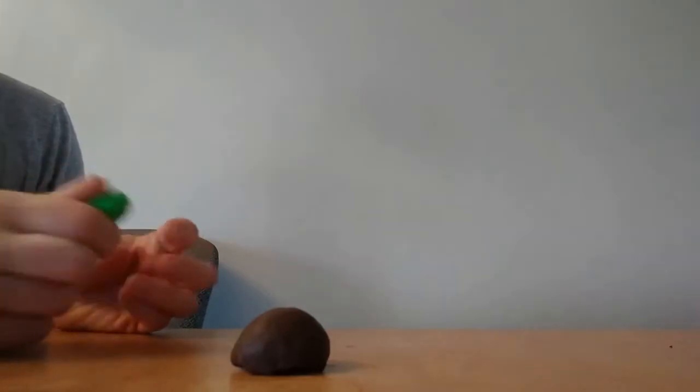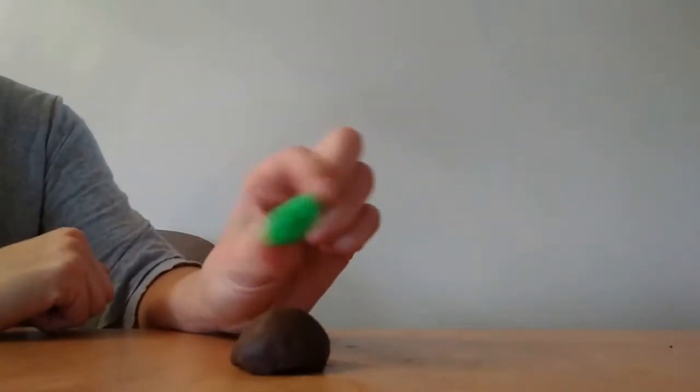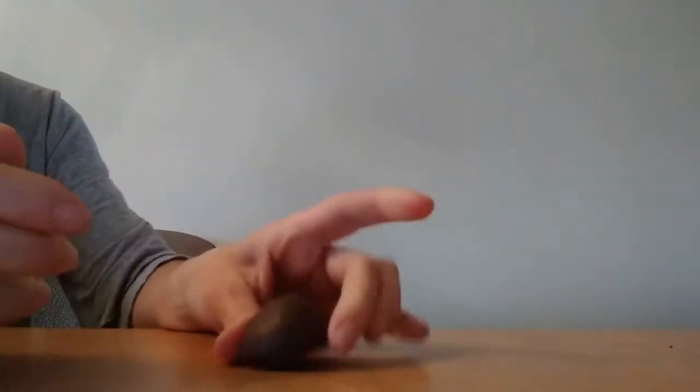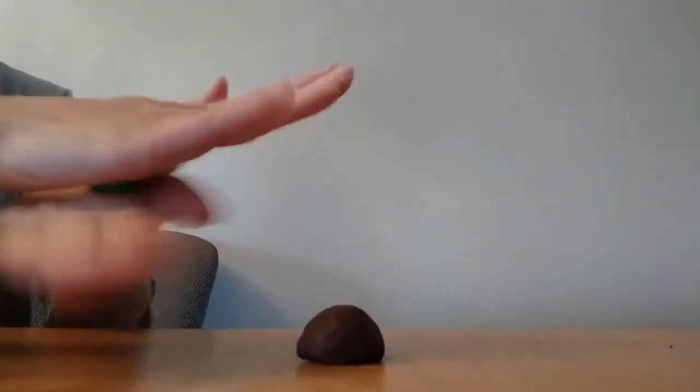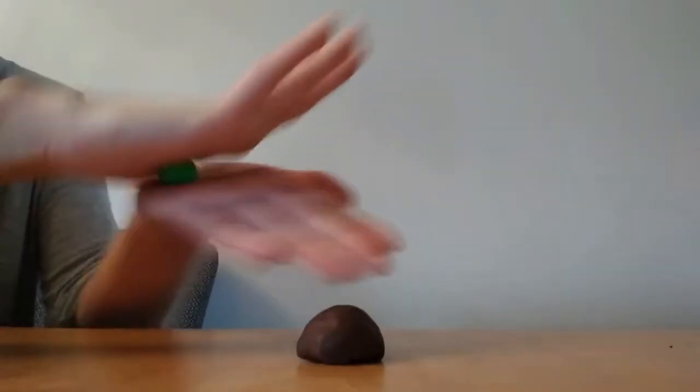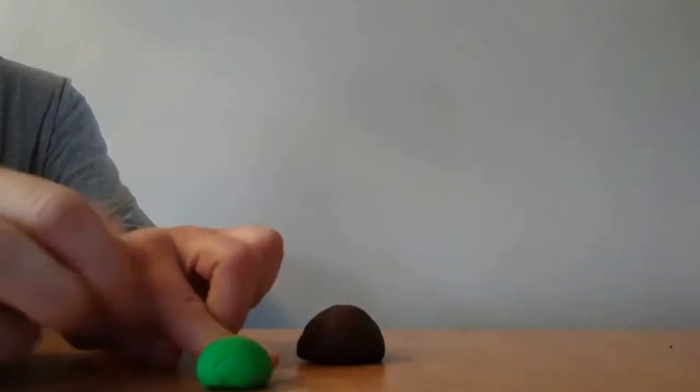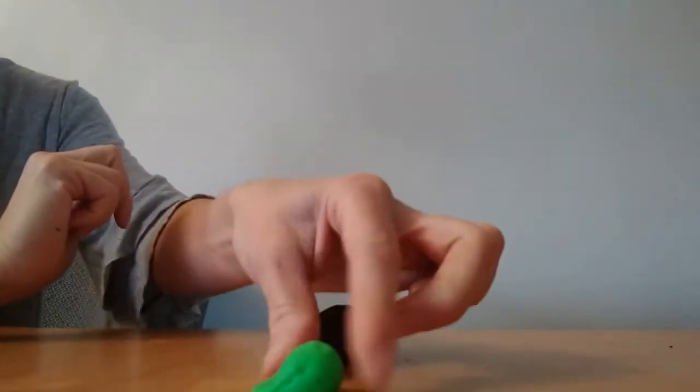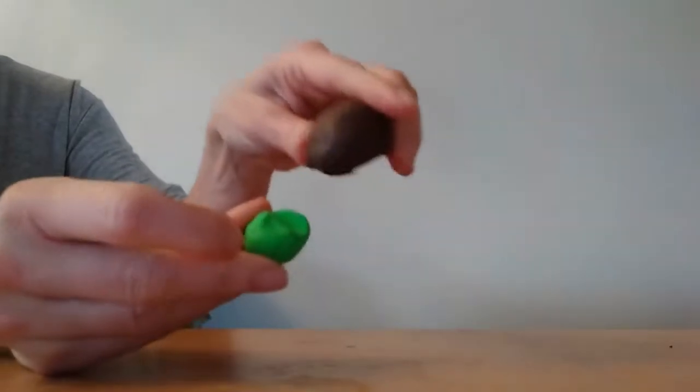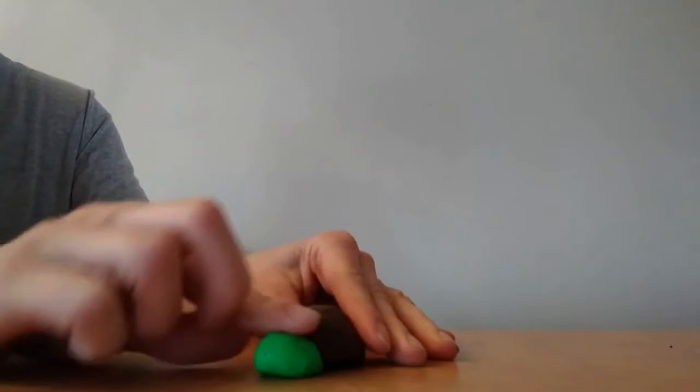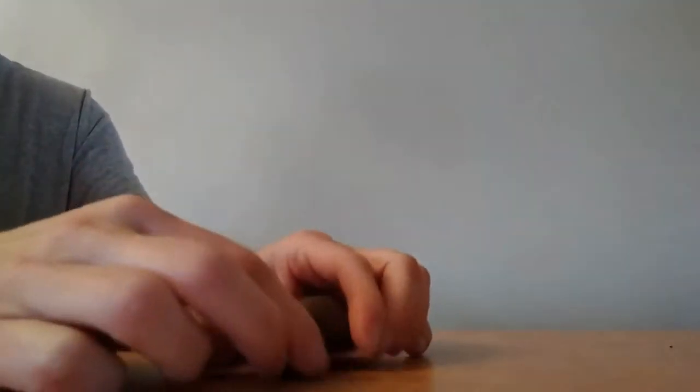Next we're going to make the head of the turtle. I'm taking some green clay. And again, I'm not sure if I said, but this is modeling clay. It won't dry out and you can reuse it, which is nice. So you're going to make a little ball like that, and then you're going to flatten one of the sides so that way you could put the shell on top and press it down.